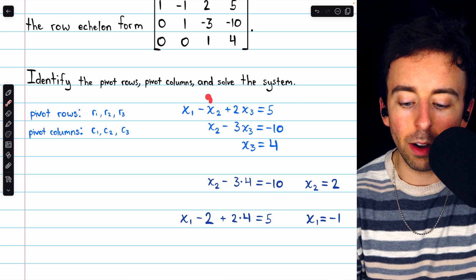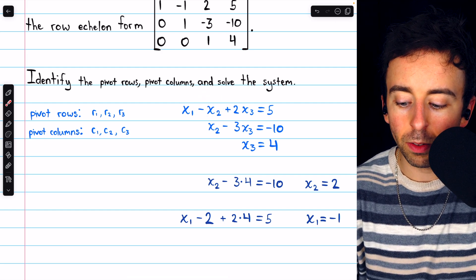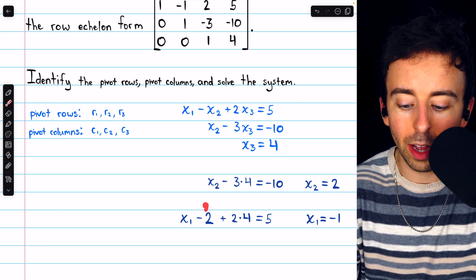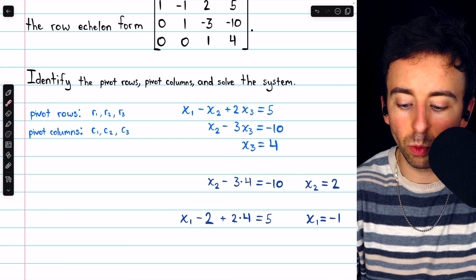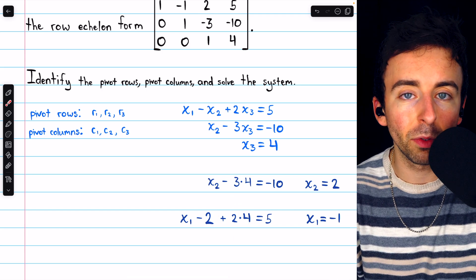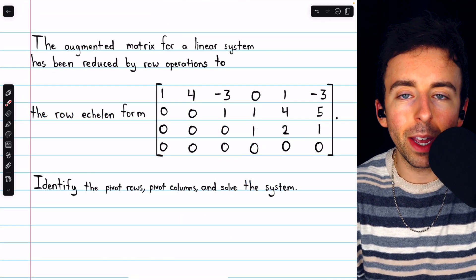Again, notice we have minus x2 in that first equation, but x2 equals 2, so we have minus 2. We also have plus 2x3, but we know that x3 is 4, which is why we see that plus 2 times 4. Here's another example that's a bit harder.